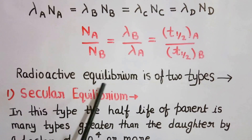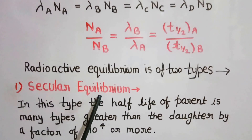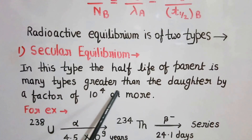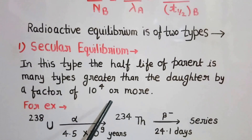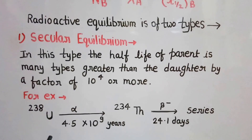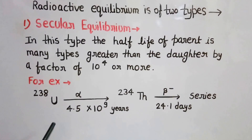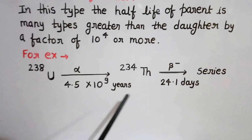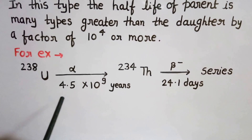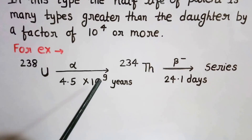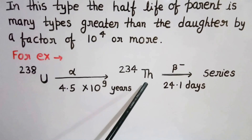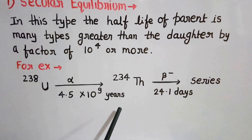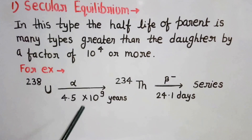Radioactive equilibrium is of two types. The first is secular equilibrium. In this type, the half-life of the parent nuclide is many times greater than that of the daughter — by a factor of 10 to the power 4 or more. For example, in the uranium disintegration series, uranium is the parent atom with a half-life of 4.5 × 10⁹ years, while thorium is the daughter nuclide with a half-life of only 24.1 days. This is secular equilibrium.